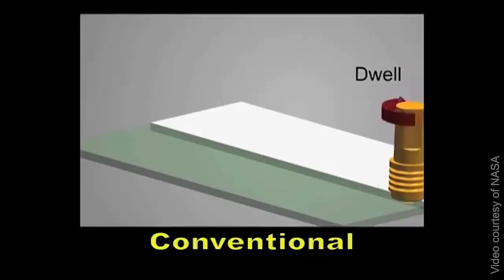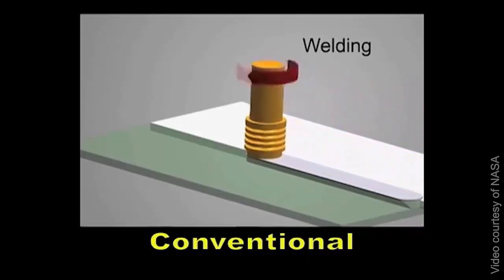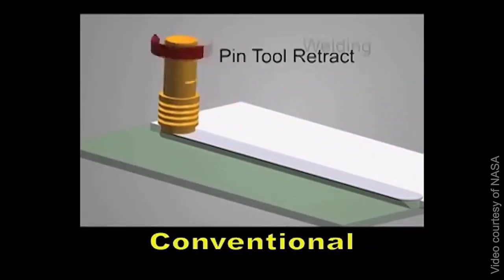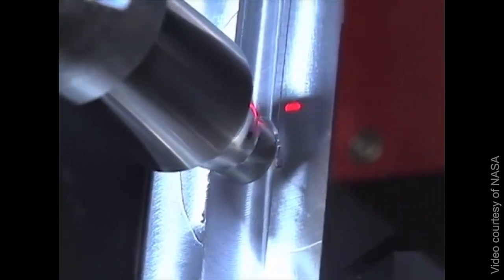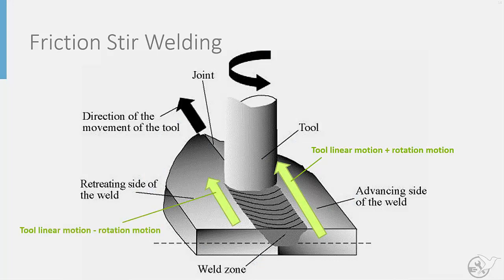The friction and stirring action is provided by a rotating pin tool that plunges into the material being joined. As the tool both moves linearly along the joint and rotates, the speed of the material is faster on the advancing side of the weld compared to the retreating side of the weld. This difference in speed results in a difference in the mixing and thus overall properties on each side of the weld.